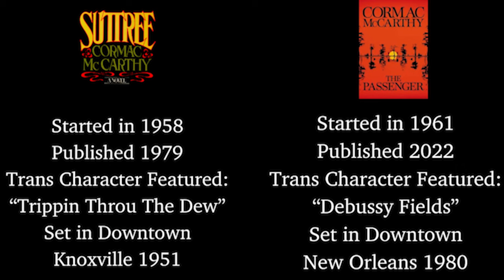Before we get going, I want all my culture warriors out there on the left and on the right to look at this chart before you start to rage in the comments. The two novels we're going to be talking about today that feature transgender characters are The Passenger and Suttree. McCarthy started writing Suttree in 1958 and The Passenger in 1961, with the characters living in downtown Knoxville in 1951 and New Orleans in 1980. So applying our 2024 political realities and social opinions on these characters and McCarthy's reasons for using them is absolutely silly.